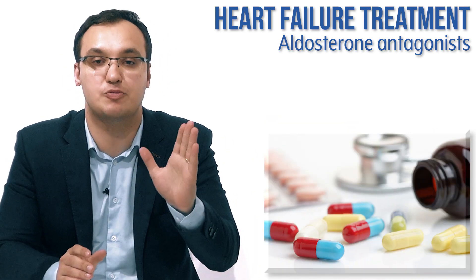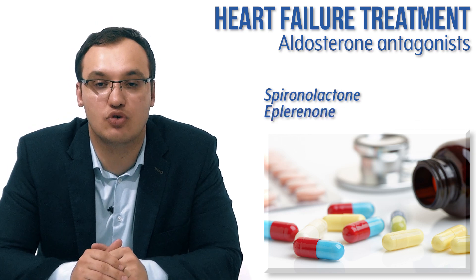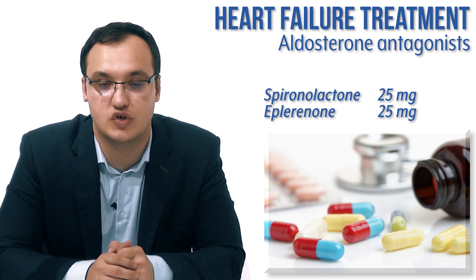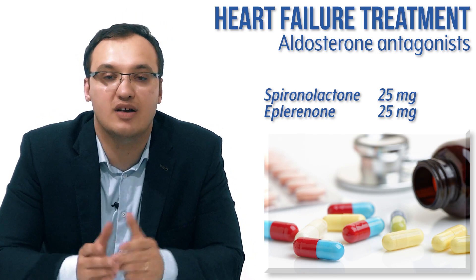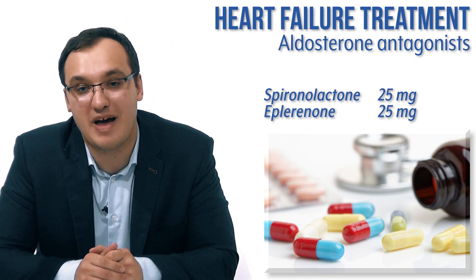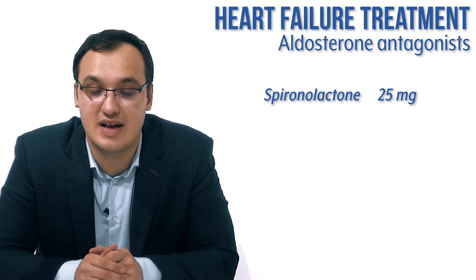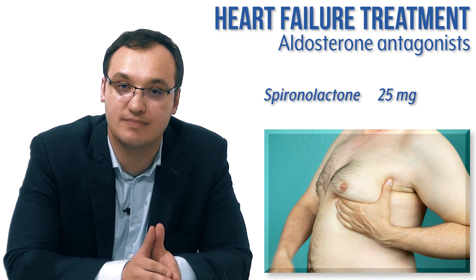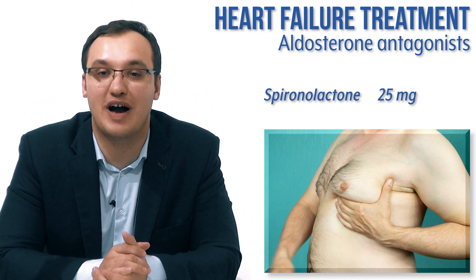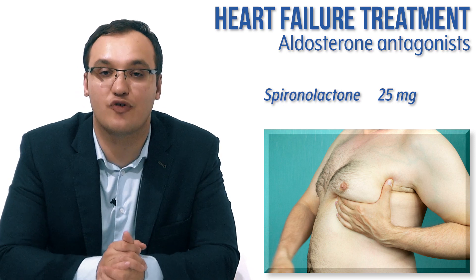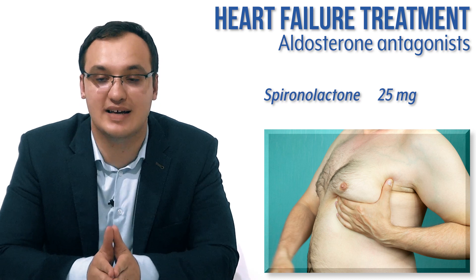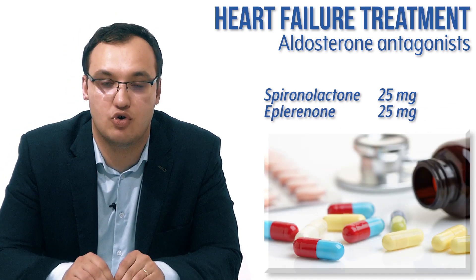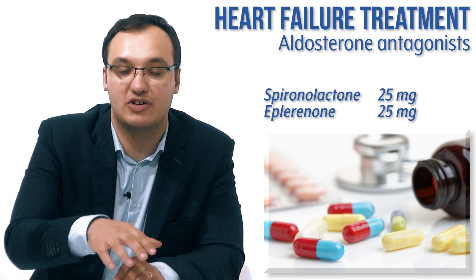We need to check the potassium level before we start this medication and after it, because if we give too much aldosterone antagonist then you can get the opposite — too high an amount of potassium, so hyperkalemia. The medications we have are spironolactone or eplerenone, both with an initial dose of 25 milligrams. Spironolactone is the most commonly used, but eplerenone is better when it comes to side effects. Spironolactone can cause gynecomastia — meaning males can develop female breasts — which is a rare but real side effect that must be disclosed to the patient.